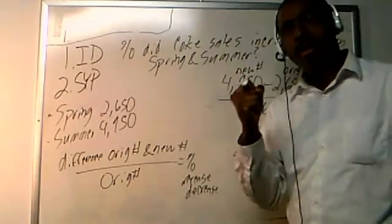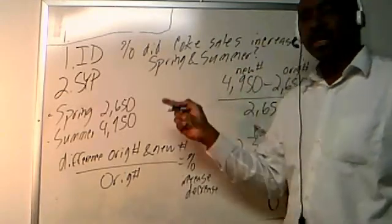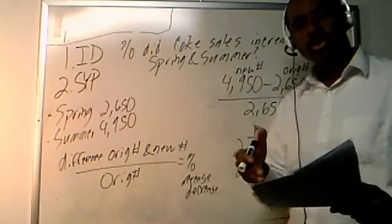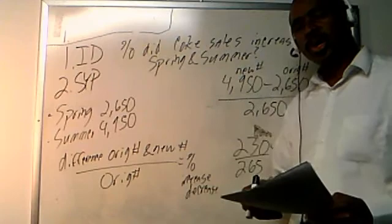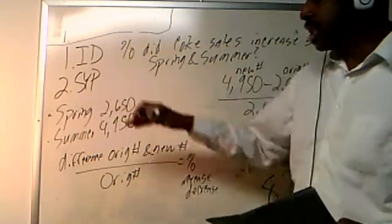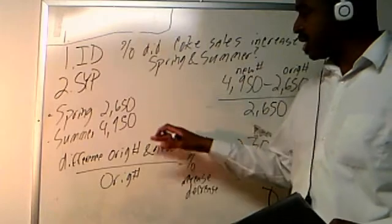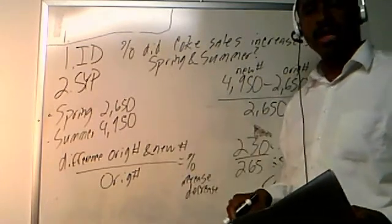It's because they do not have this type of method, which I train you to do with the Get Your GED Now Test Preparation Series. So anyway, then we stated our path and we said, well, the spring sales were 2,650 and the summer sales were 4,950.